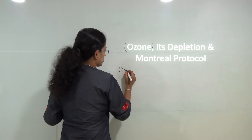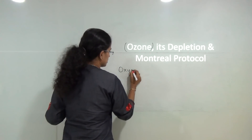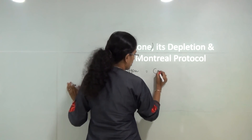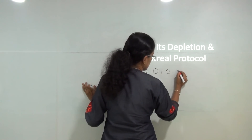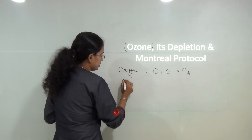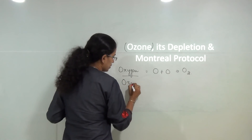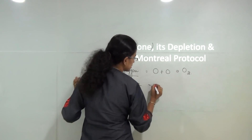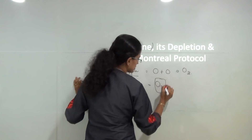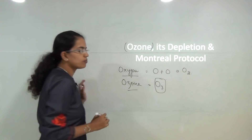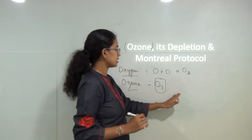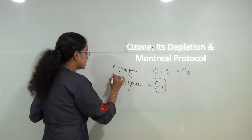When we talk about oxygen, two atoms combine to form an oxygen molecule (O₂). However, when we talk about ozone, it is three atoms of oxygen that form ozone, so we denote ozone by O₃. That is the fundamental thing we need to understand.